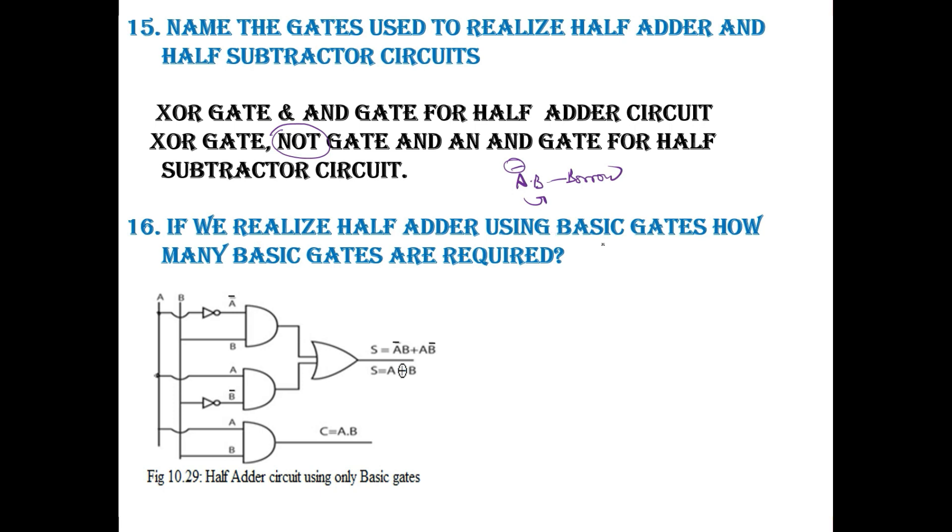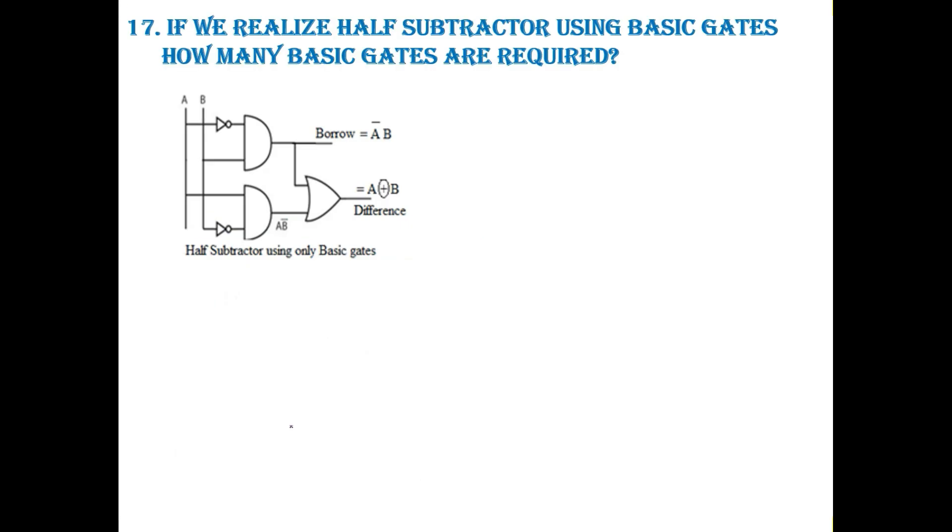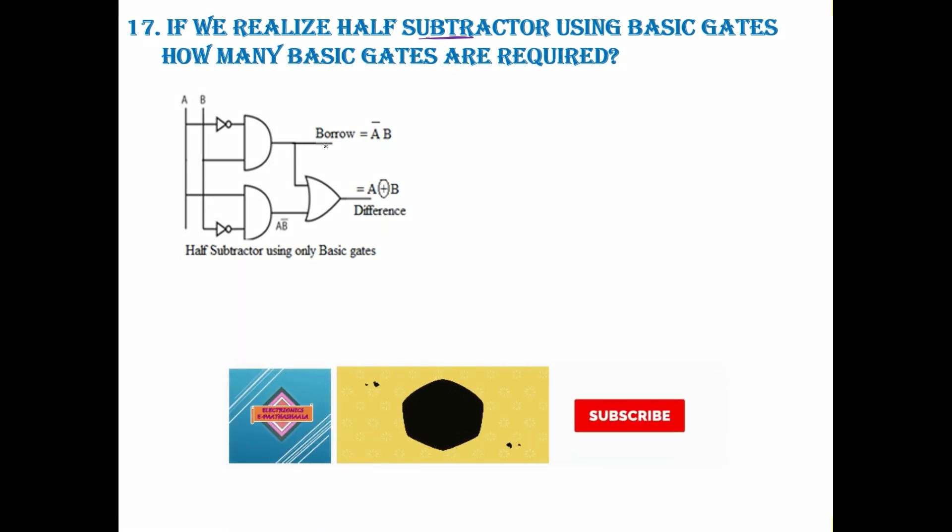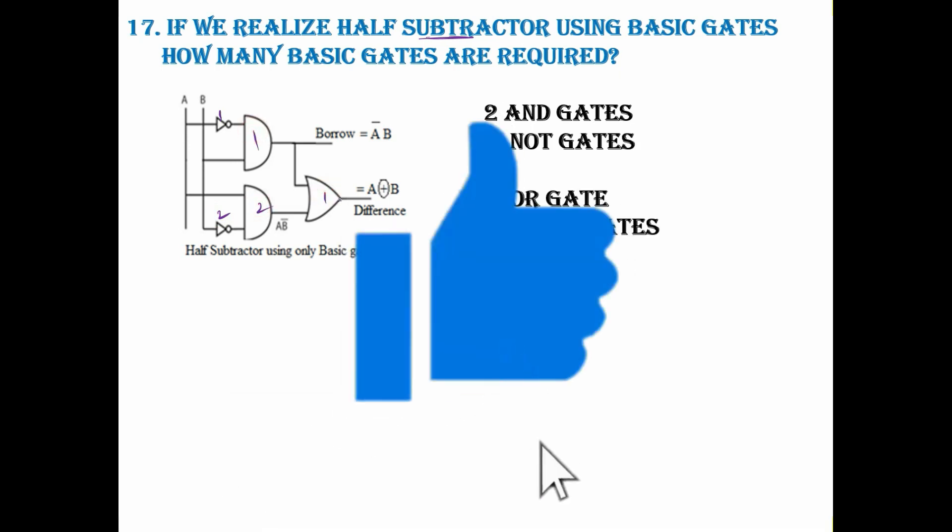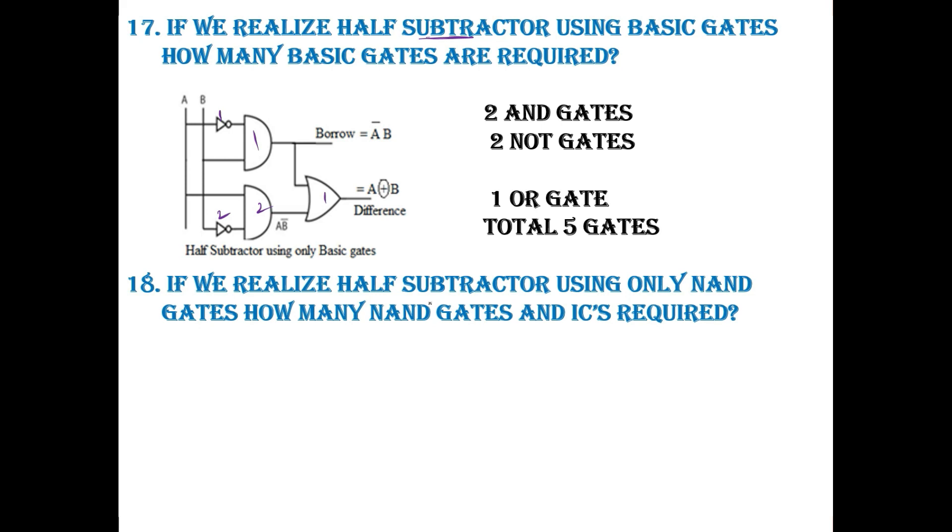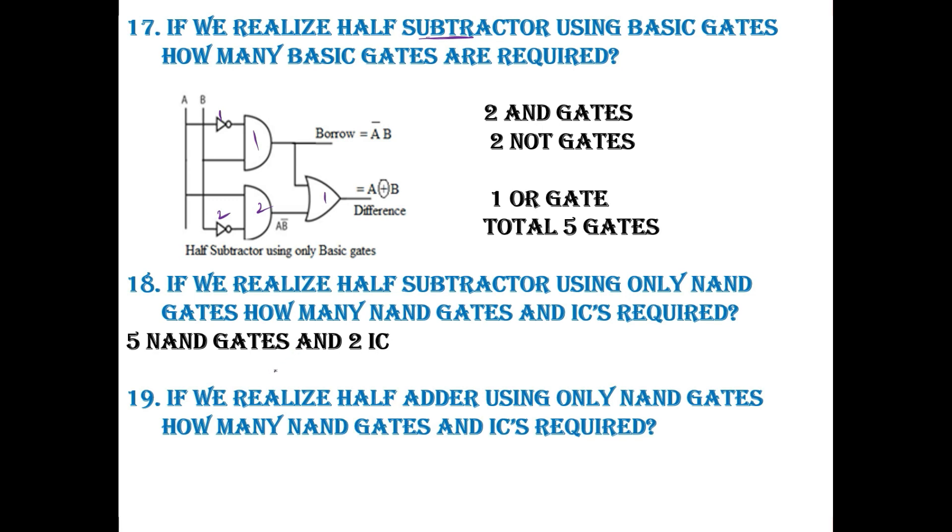So if we realize half adder using basic gates, how many gates do we require? I have already told in the beginning itself: 2 NOT gates, 3 AND gates, 1 OR gate. Totally 6 gates I require. If we realize half subtractor using basic gates, how many basic gates do we need? Again 2 NOT gates, 2 AND gates, 1 OR gate. Totally 5 gates are required. If we realize half subtractor using only NAND gates, again 5 gates or 2 ICs. Only NAND gate for half subtractor or half adder, it is one and the same: 5 NAND gates and 2 ICs.